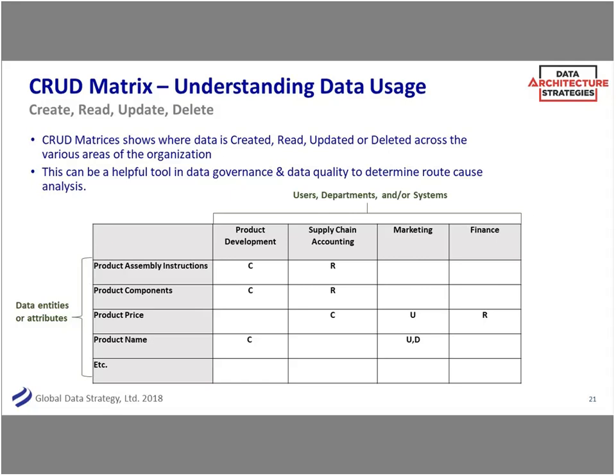The CRUD matrix — create, read, update, delete — is a horribly named but very helpful tool. There are different ways to do it: by system, by attribute, by entity, or by department. For example, talking about product price: who enters the price? Is it accounting that puts it in? Maybe marketing can update it and finance reads it. But you might find two people think they're creating it — well, then who's the master? Who's the main owner? You better at least discuss that before you implement the system, because that's often where things start to go wrong.